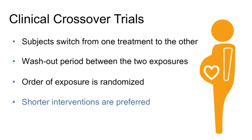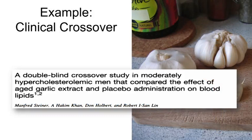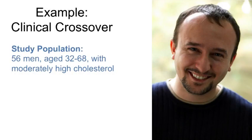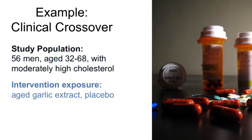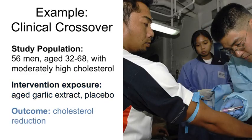Let's look at an example of a crossover clinical trial. In this study, researchers wanted to compare the effect aged garlic has on blood lipids. Study participants were men ages 32 to 68 with moderately high cholesterol. The men were randomized to take a dietary supplement containing either garlic or a placebo for a six-month period. Blood tests were recorded, then each participant switched to the other supplement for a time, after which blood tests were recorded again. The test results showed that garlic supplements appeared to reduce cholesterol as well as blood pressure.